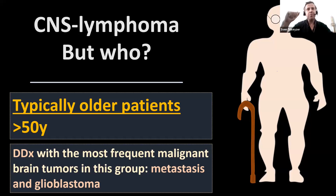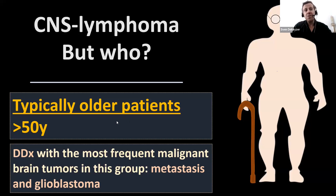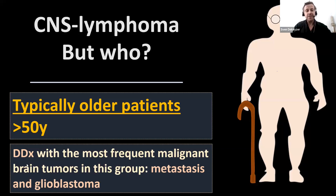CNS lymphoma typically occurs in somewhat older patients — generally in their fifties or older. That means the differential diagnosis will be with tumors most frequent in this age group: in elder adults, that's mainly cerebral metastasis and glioblastoma.